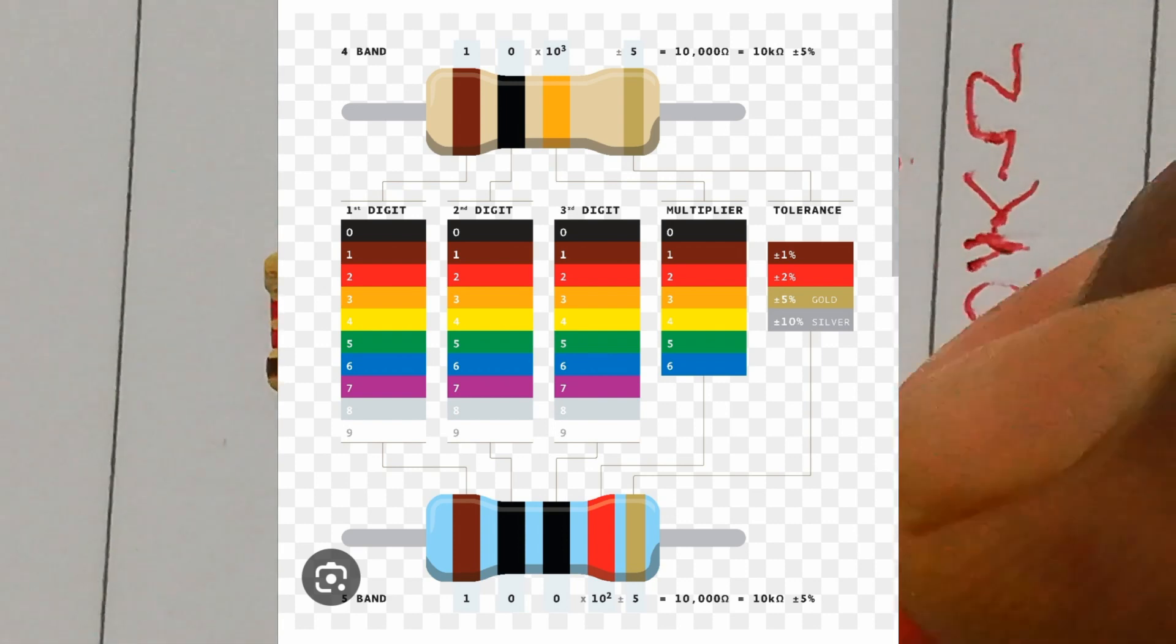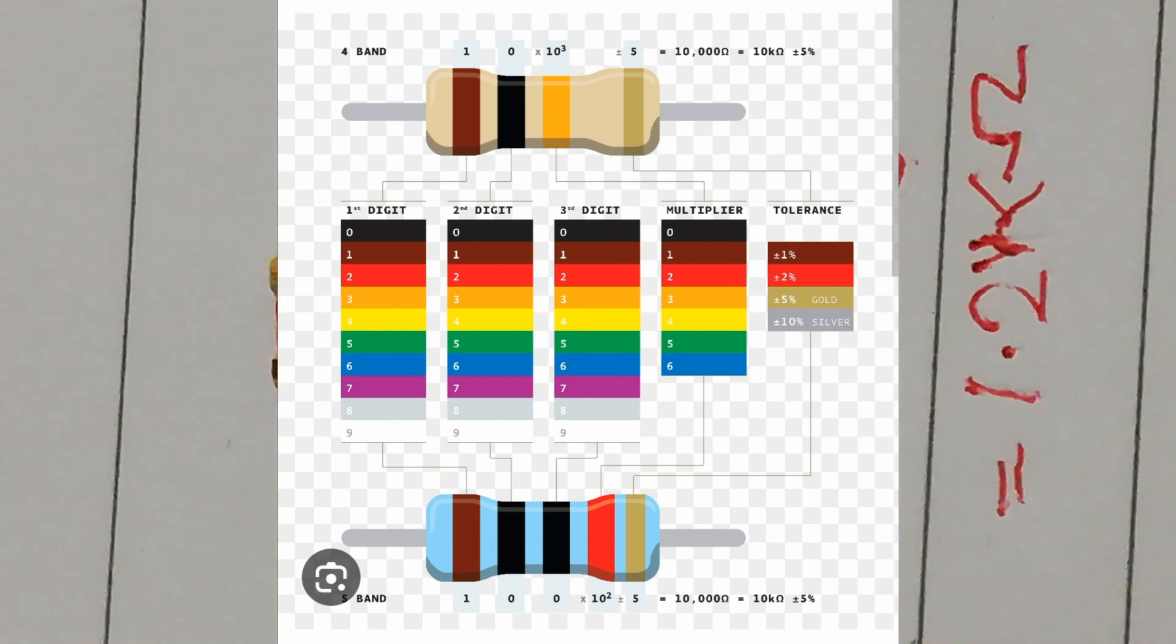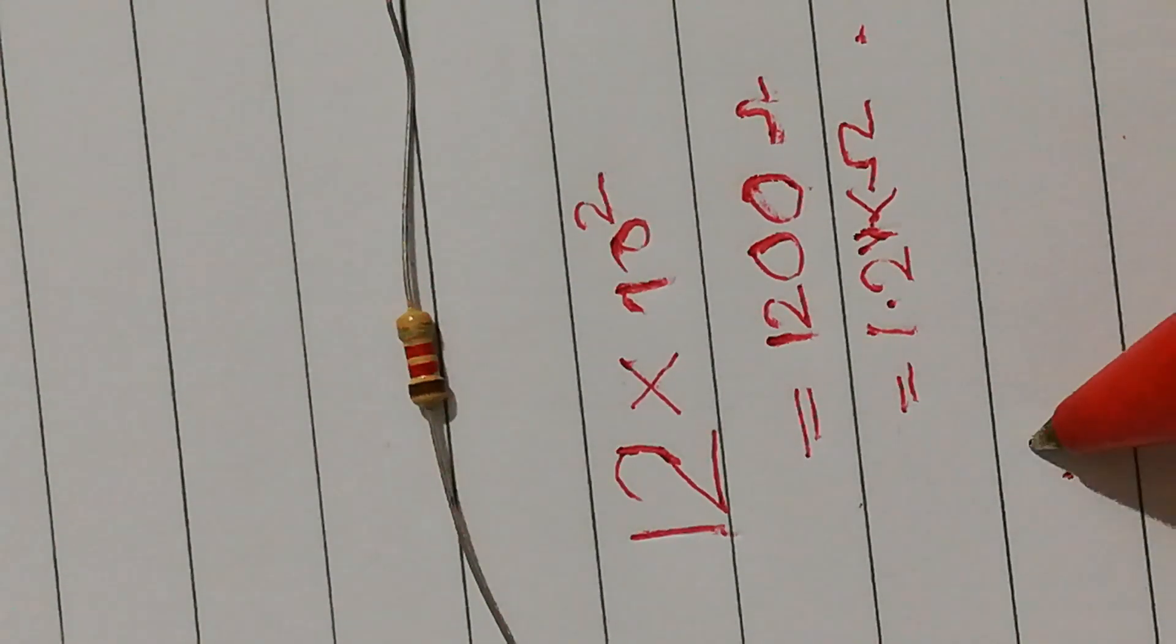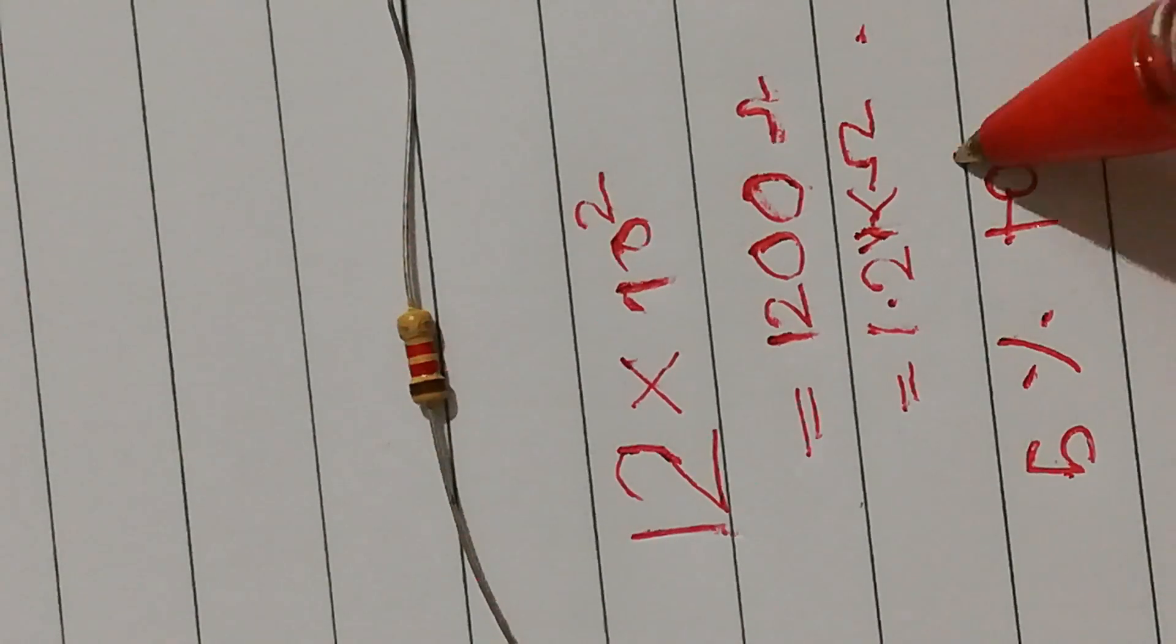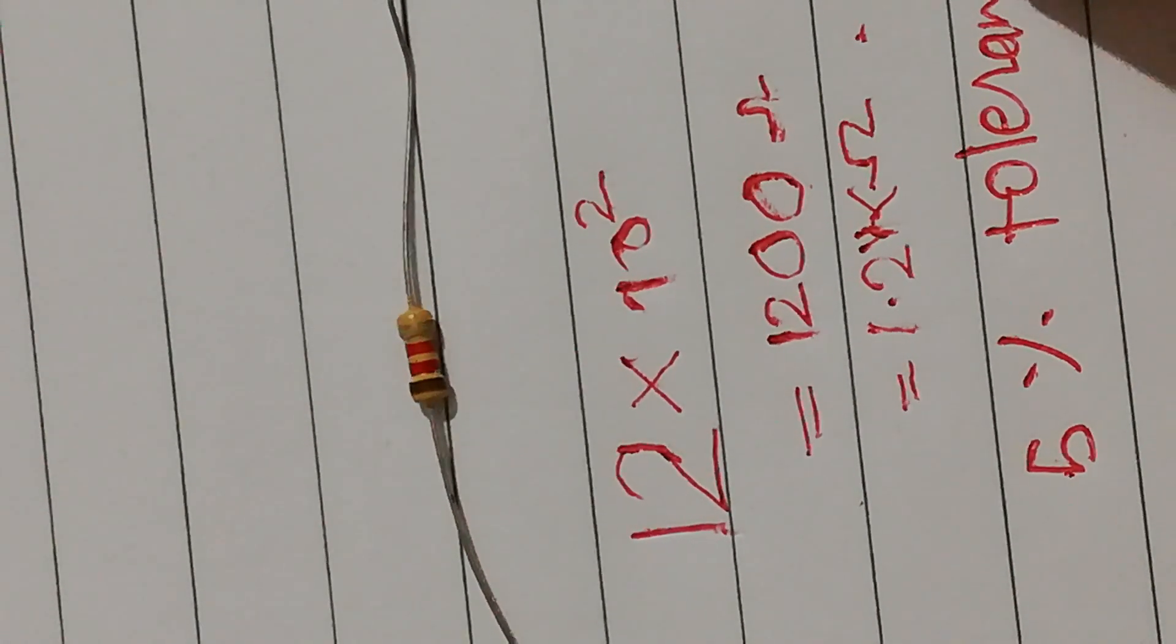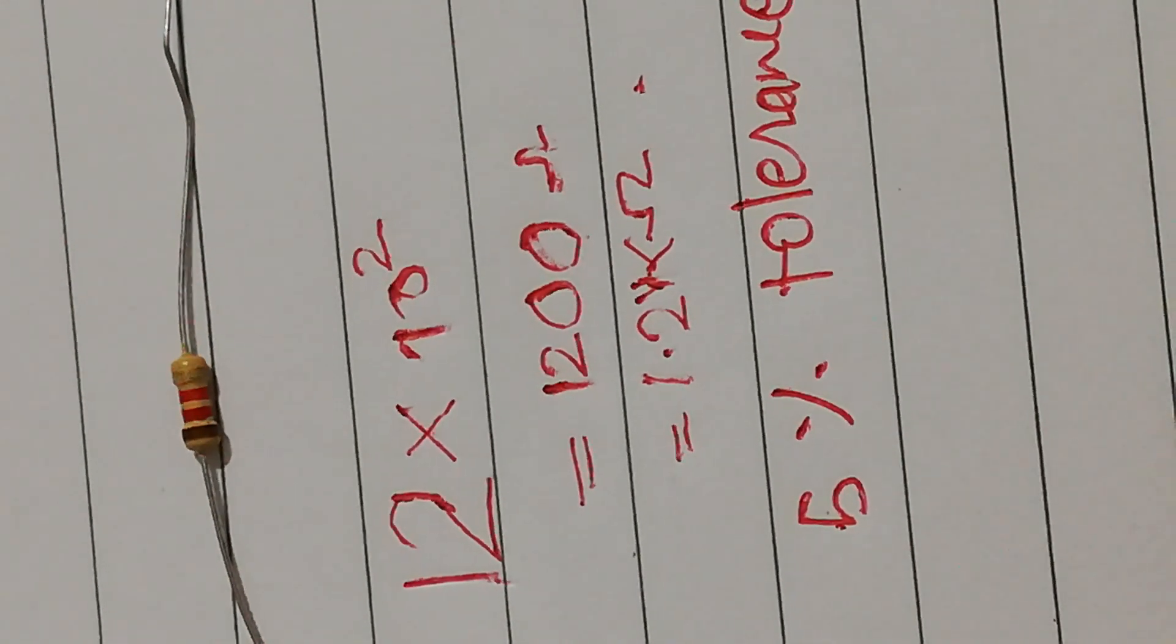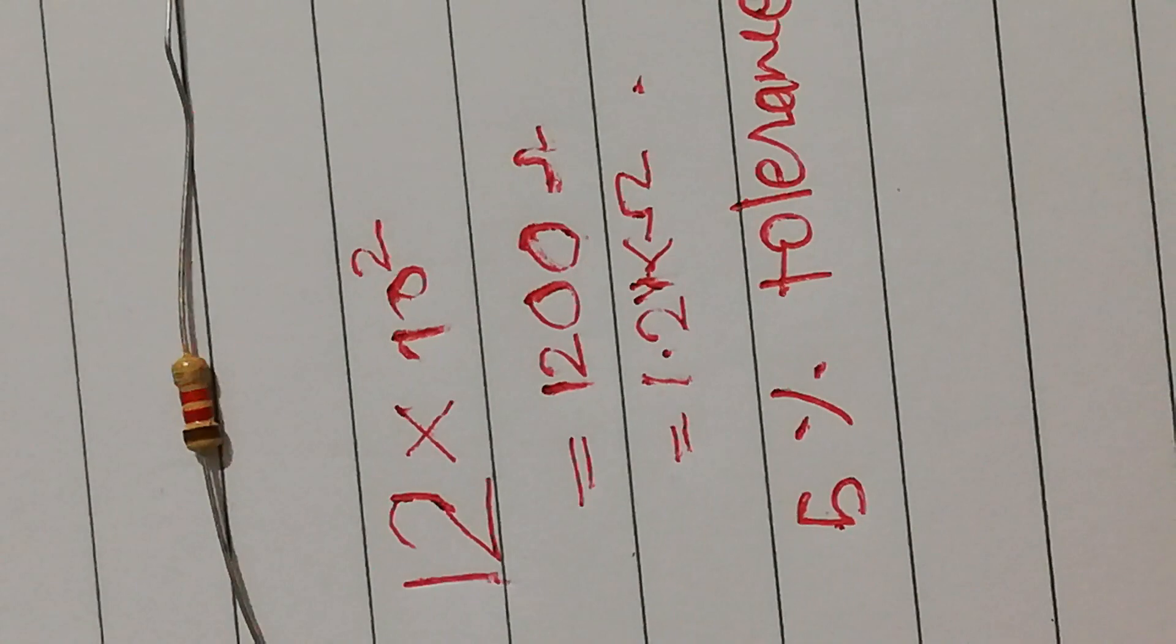So this resistor will have a 5% tolerance. This resistor will have a 5% tolerance. So here you can write, since it is gold, 5% tolerance.